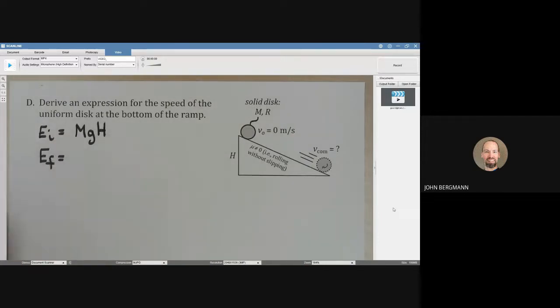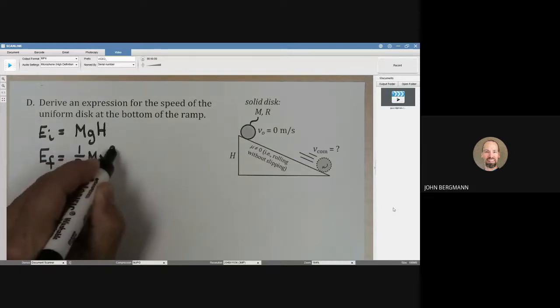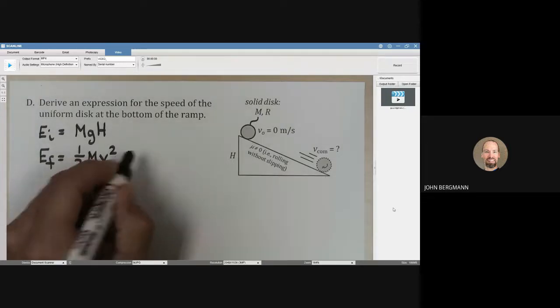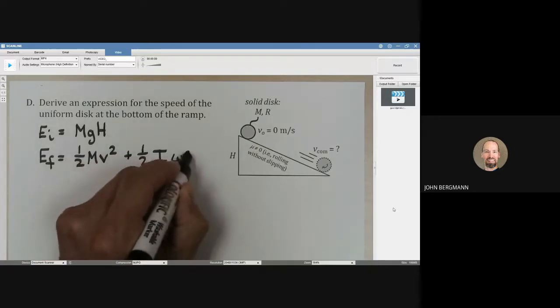The energy at the end, there's no gravitational potential energy, but we do have translational kinetic energy. I'm not going to write v com, I'm just going to write v plus rotational kinetic energy, one-half I omega squared.